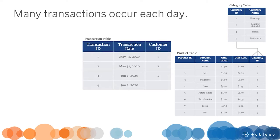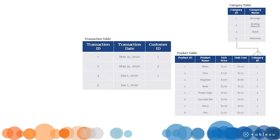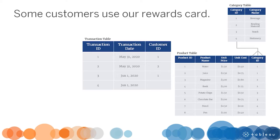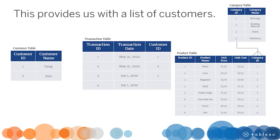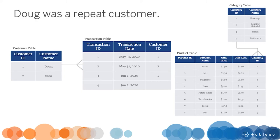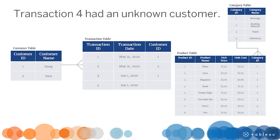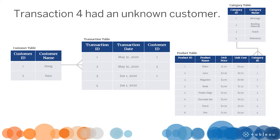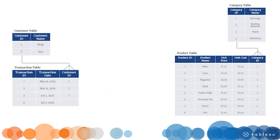Many transactions occur each day. Each transaction has a unique transaction ID. Some customers use our reward card system during a transaction, providing us with a partial list of customers. Doug was a repeat customer in transactions one and three. Transaction four had an unknown customer. There is a one-to-many relationship between the customer table and the transaction table. The two tables relate based on a common field, customer ID.